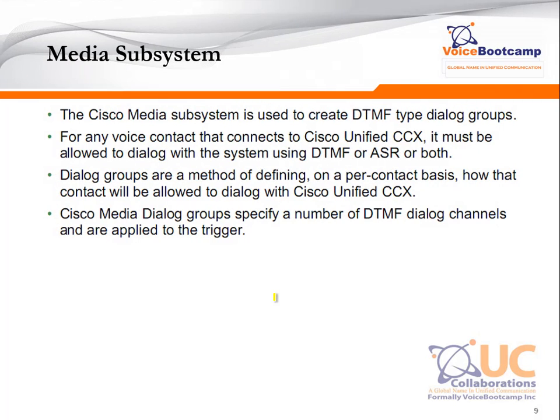The media subsystem is used to create a DTMF-type dialogue group. For any voice contact that connects to Cisco Unified CCX, it must be allowed to dialogue with the system using DTMF or ASR. Whenever you are in contact with the customer, the system might ask them to enter their account number or PIN number in the form of digits or a voice command. To carry those inputs, it needs to create a media dialogue — a logical path between the script or the Contact Center engine and the customer. The dialogue groups define, on a per-contact basis, how that contact will be allowed to dialogue with Cisco Unified CCX. The Cisco Media Dialogue Group specifies a number of DTMF dialogue channels and is applied to the trigger.